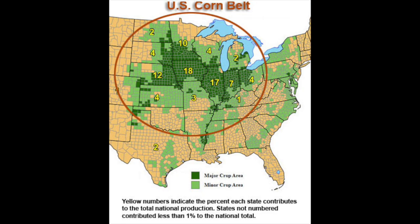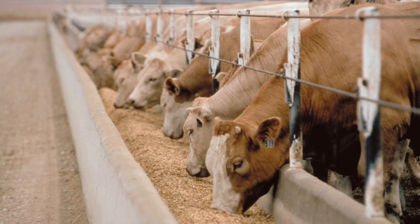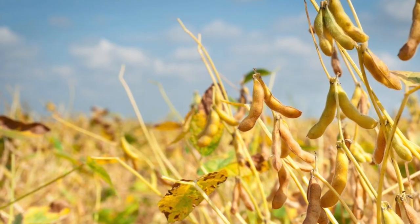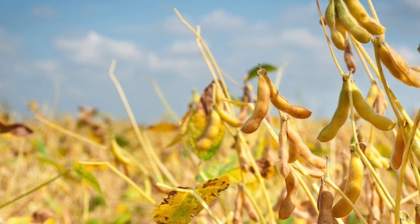Much of the cattle feed comes from corn. The corn belt in America stretches from Ohio all the way to the Dakotas, and this corn is used to feed animals — most corn goes to animals. So when you see pictures of cornfields out west, much of that is going to feed animals. Another important crop is soybeans. While many of us might eat soybeans in things like tofu, much of the soybeans are also going to feed animals.